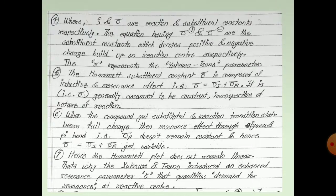The nature of reaction: when the compound gets stabilized and the reaction transition state has full charge, the resonance effect through sigma and pi bond means sigma doesn't remain constant. Hence the Hammett plot does not remain linear, and that's why Yukawa-Tsuno introduced the resonance parameter r, which quantifies demand for resonance at a reactive center. Sigma gets modified to sigma plus equals sigma plus r times (sigma plus minus sigma) and sigma minus equals sigma plus r times (sigma minus minus sigma) for positively and negatively charged reactions respectively.